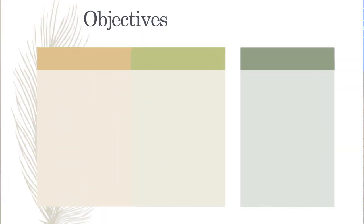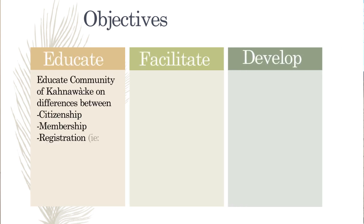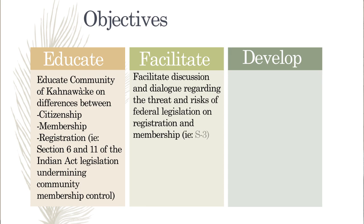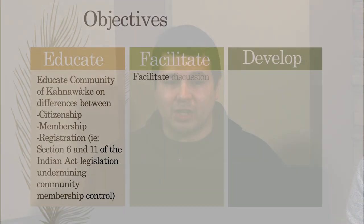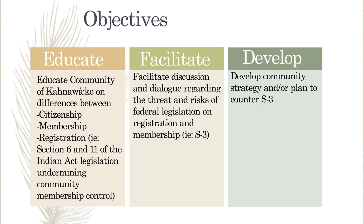Part of our objectives is to educate the community of Kahnawake on the differences between citizenship, membership, and Indian registration — in particular, Section 6 and Section 11 of the Indian Act legislation undermining community membership control. We'd also like to facilitate discussion and dialogue regarding the threat and risk of federal legislation, and to develop a community strategy or plan to counter Bill S-3.